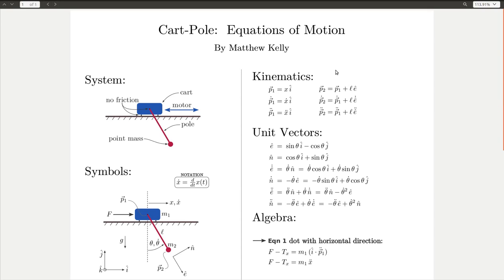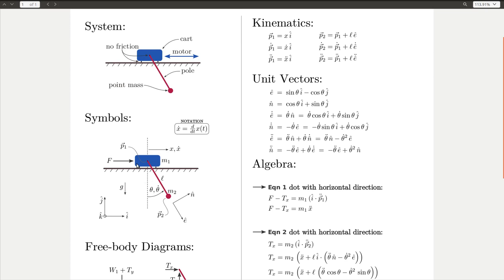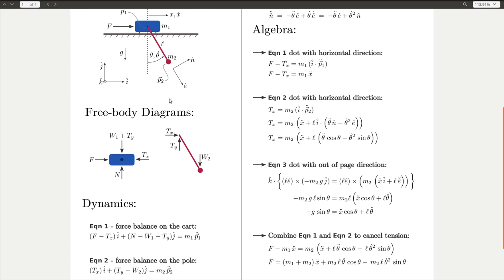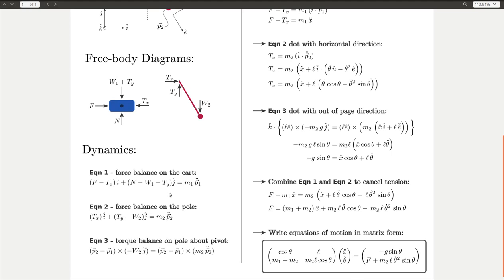Welcome back. This is part two of a two-part video where I go over the equations of motion for a cart-pole system, or how to derive the equations of motion for a cart-pole system. In the previous video, I described a cart-pole and then went over some mathematical symbols that we're going to use throughout the derivation, drew some free-body diagrams, and then used the Newton-Euler equations to write out some expressions that relate those forces to accelerations.